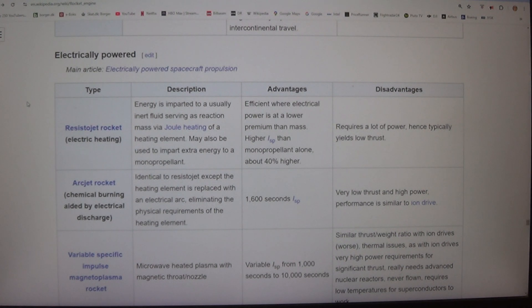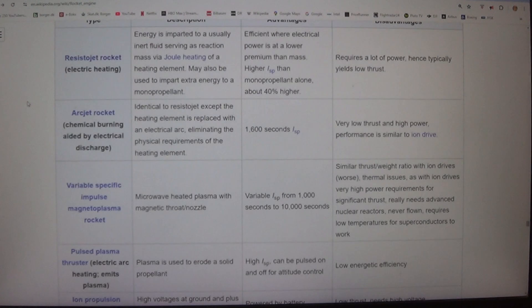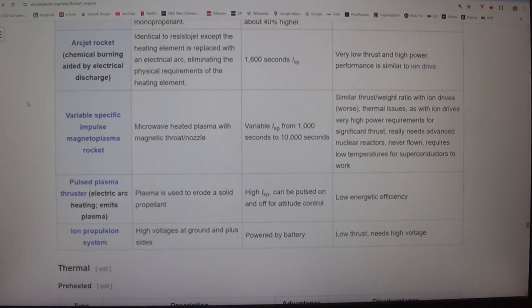Arcjet rocket - chemical burning aided by electrical discharge. Identical to resistojet except the heating element is replaced with an electrical arc, eliminating the physical requirements of the heating element. 1,600 seconds ISP. Disadvantages: Very low thrust and high power. Performance is similar to ion drive.